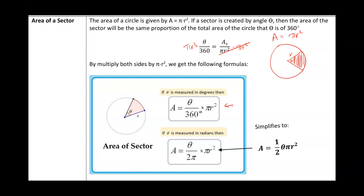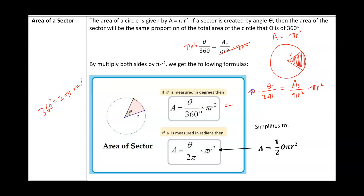Now what if theta is measured in radians? Remember that 360 degrees equals 2 pi radians. So instead of 360, we say theta is to 2 pi radians, which represents the entire circle. That equals the area of the sector divided by pi r squared. Multiplying both sides by pi r squared, we get the area of the sector equals pi r squared times theta over 2 pi.